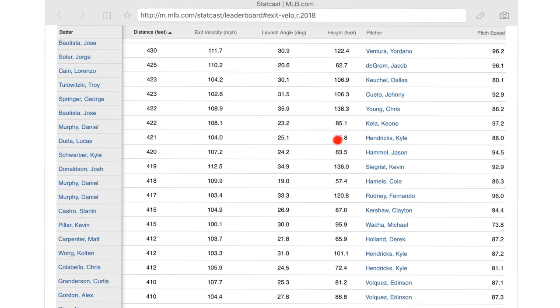I'm going to select Daniel Murphy. This is from 2015. Daniel Murphy's home run was 421 feet. And we're looking for the height, which is that column all the way on the right, which was 85.8 feet. This was in 2015 in the postseason against the Chicago Cubs at Wrigley Field.